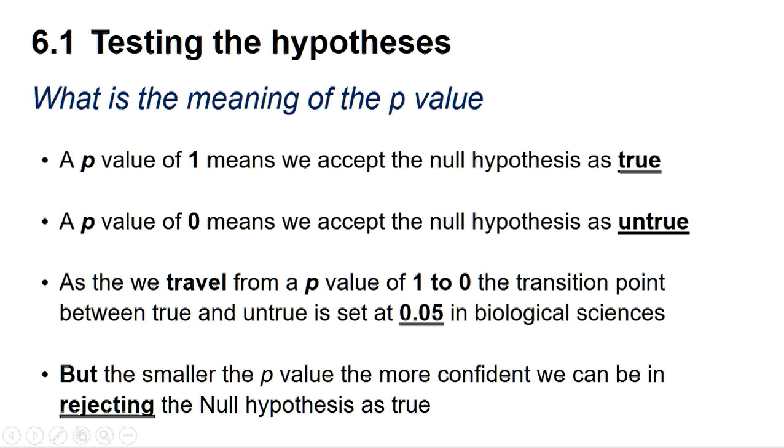So what is the meaning of the p-value? A p-value of 1 means we can accept the null hypothesis as true, whereas a p-value of 0 means we can accept the null hypothesis as untrue. As we travel from a p-value of 1 to 0, the transition point between true and untrue is set at 0.05 in the biological sciences. But the smaller the p-value, the more confident we can be in rejecting the null hypothesis. And for some experiments, a transition p-value of 0.01 or even 0.001 may be preferable.